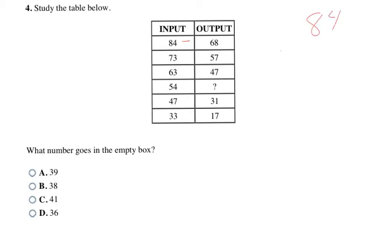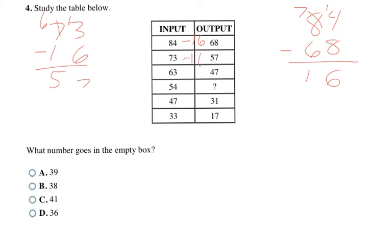84 minus what gets me to 68? I'm going to have to go over here and work that out. I'm going to end up borrowing. So 16. If I take 84 minus 16, that'll get me to 68. I'm going to see, does that work for the 73? I have to do some borrowing there, but it does work. 73 minus 16 is 57. Then I continue to do it, and I see that it does continue to work for all of the rows.